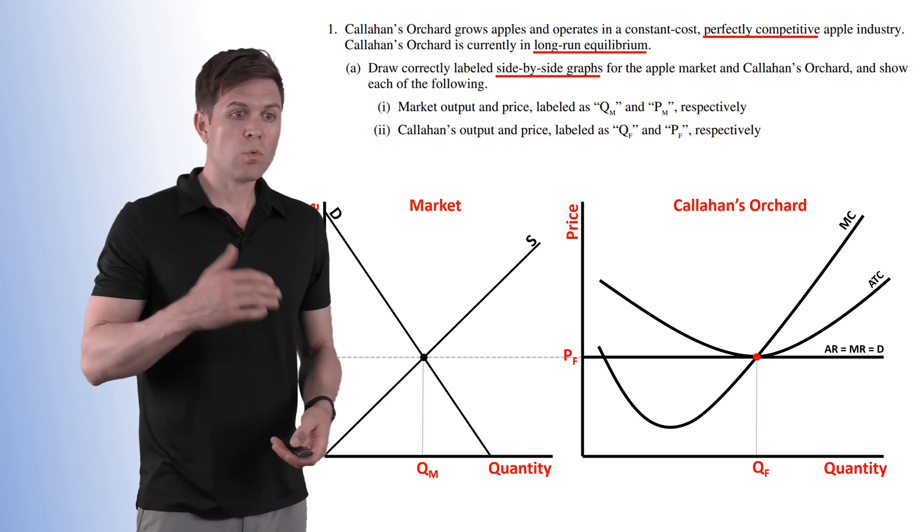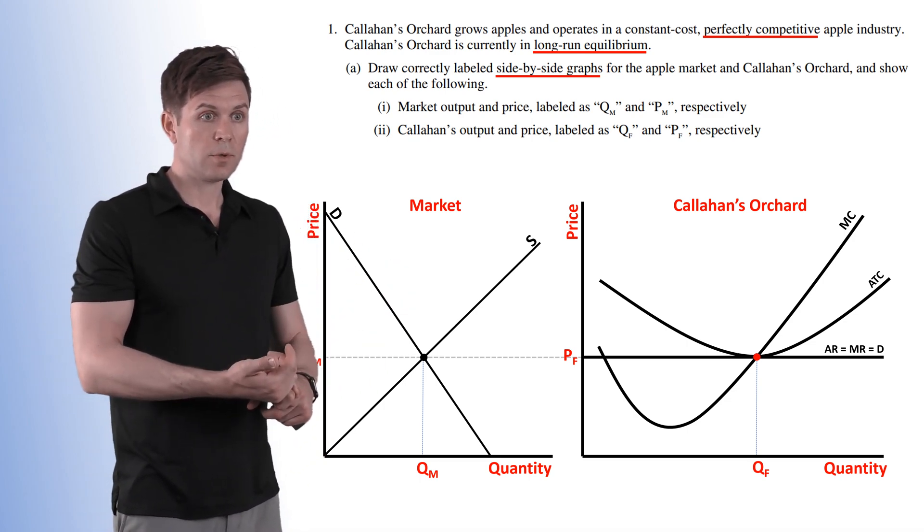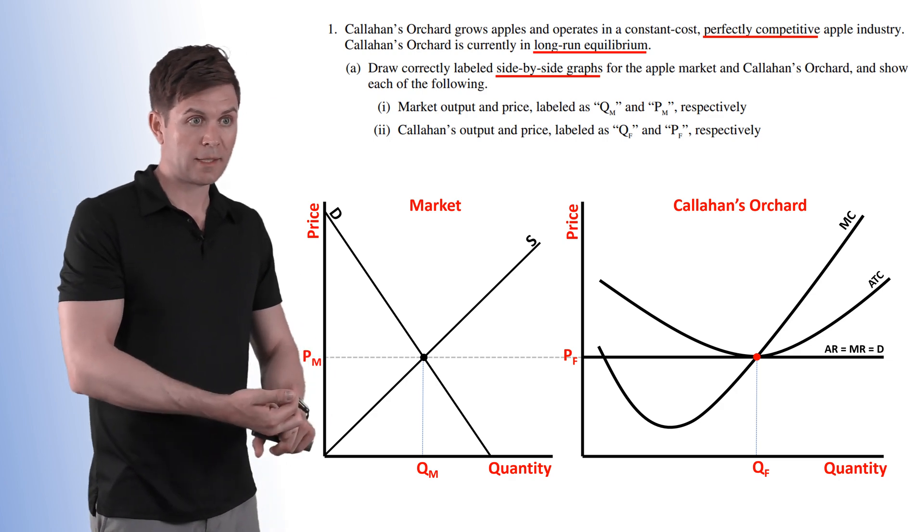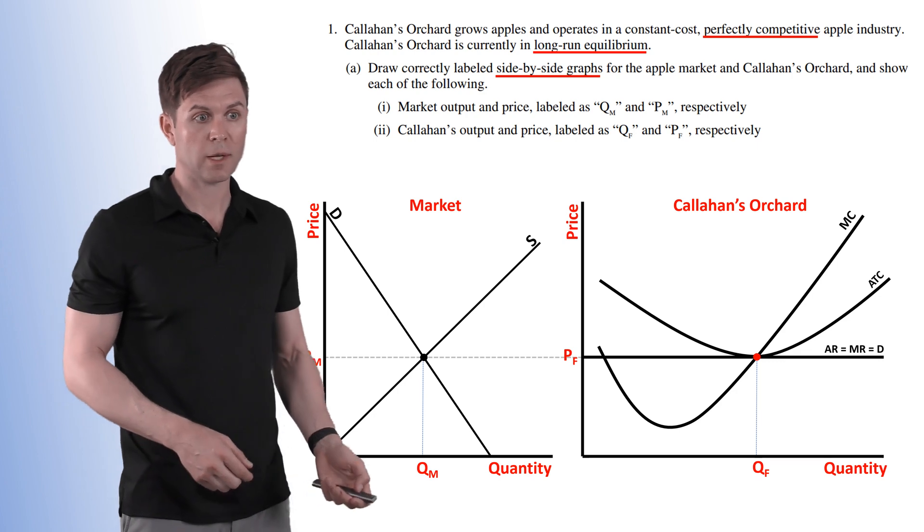So get our demand and our supply curves up there and let's throw our quantities. Quantity for the market, quantity for the firm. Now at this point we got everything they've asked. We've hit Part I, PM and then we got Callahan's Output and Price labeled as QF and PF for Part 2 right there.